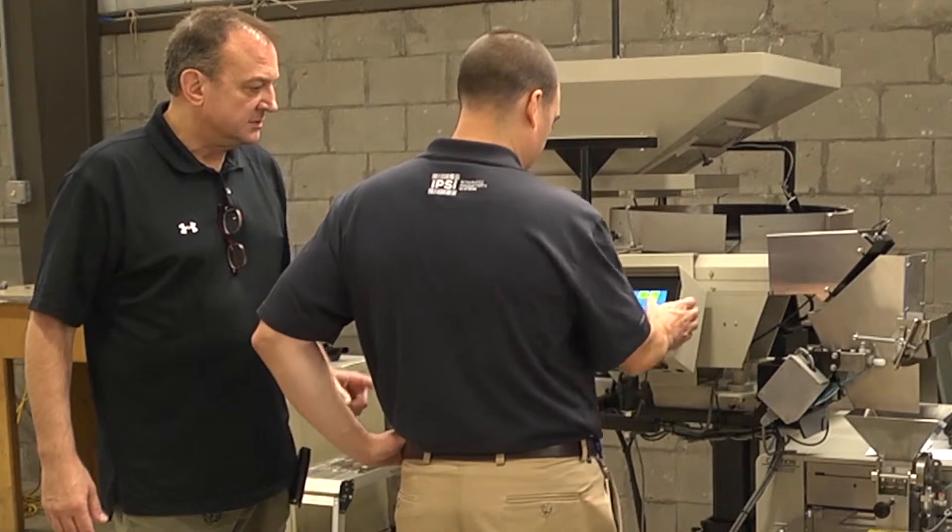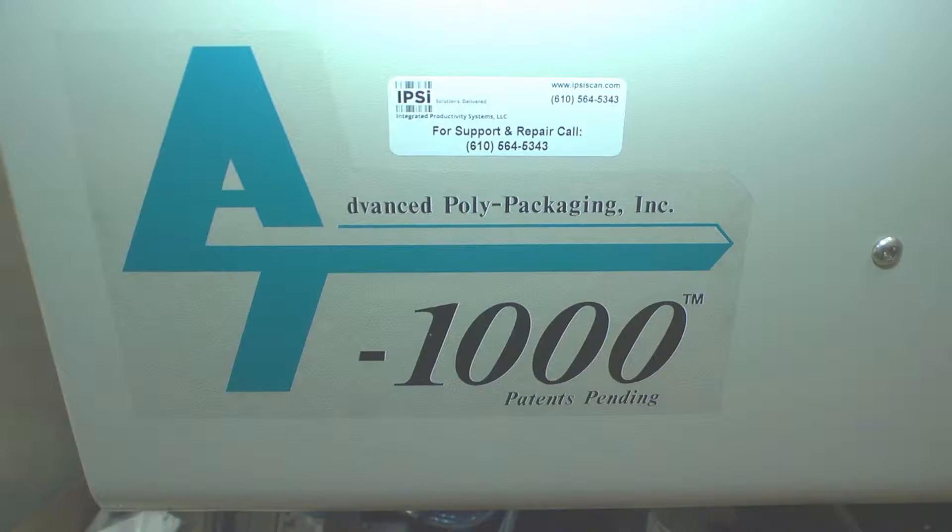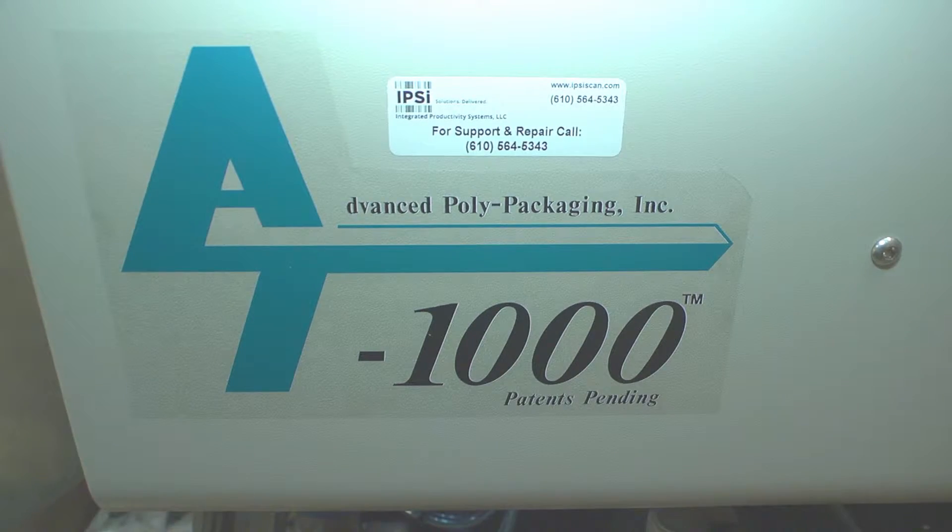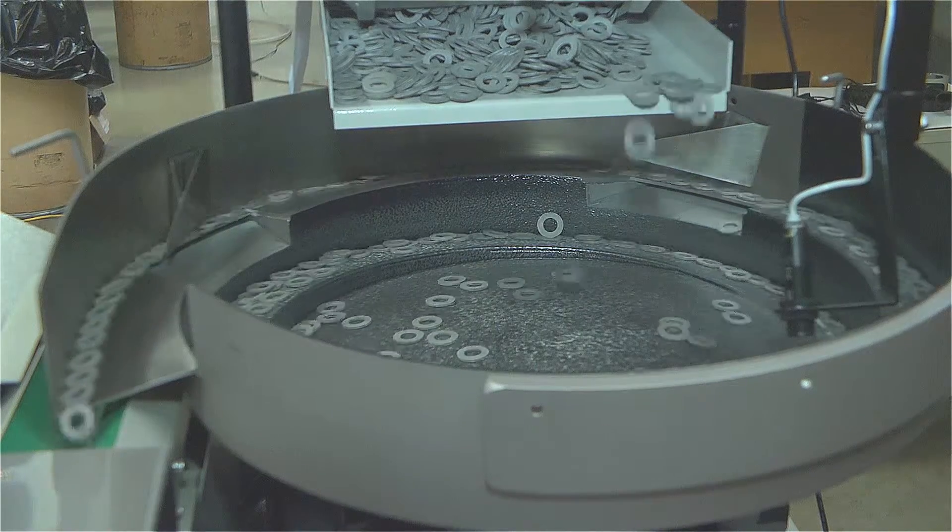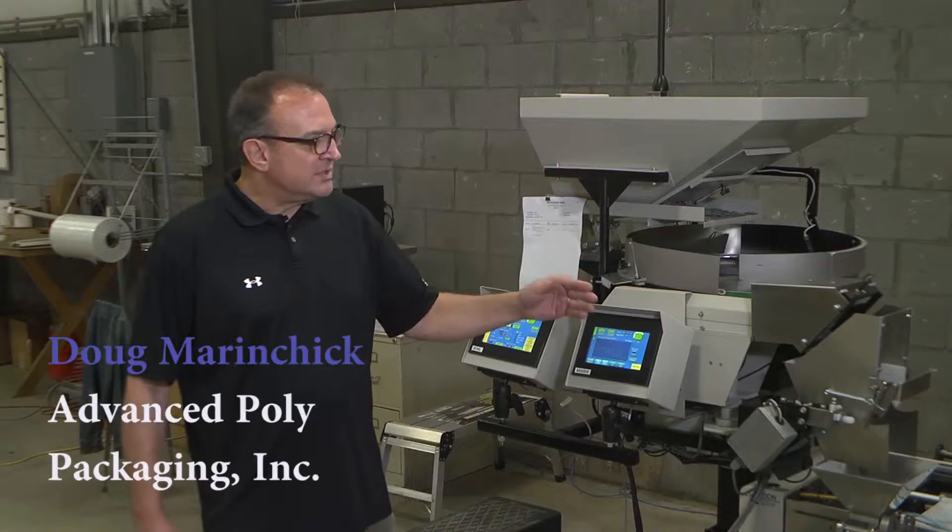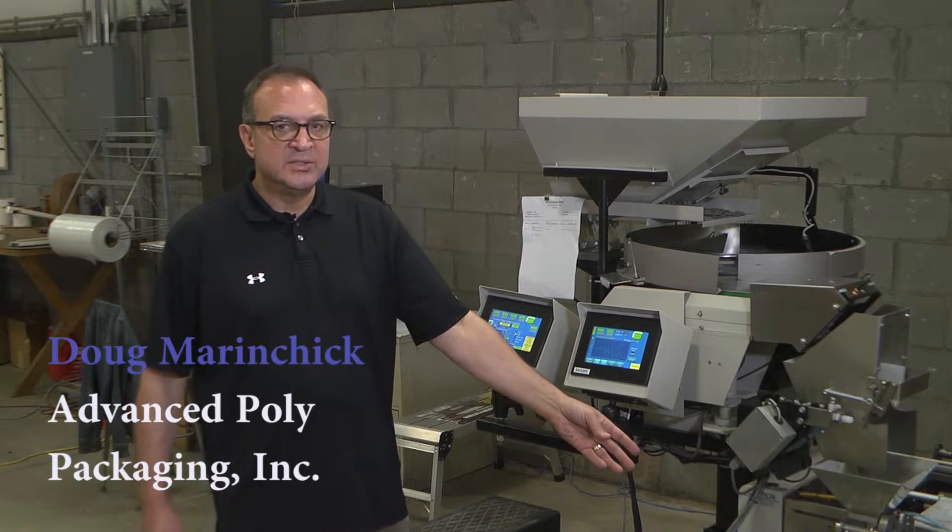Right now this is latest technology. The T1000 UCS counter bowl bagger printer. Counts, weighs, and bags your product.